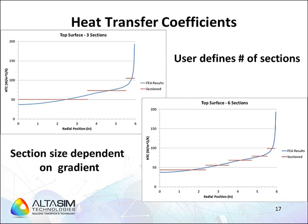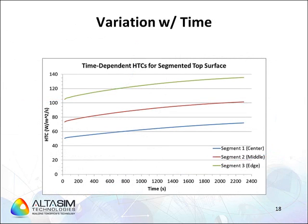Currently, the design methods used in industry specify that the HTC values are held constant over time. However, the results from COMSOL show that these HTC values do vary with time. In these results, the values of HTC are calculated at three different segments on the y-axis, and the time in seconds appears on the x-axis. The case considered here segments the top surface of the pancake into three segments. The center segment, or blue curve, has the lowest HTC, and the outer edge, or green curve, has the highest HTC. These data indicate that HTC can increase by approximately 40% during the quenching process. Thus, the results from COMSOL show that the constant HTC approximation introduces error into the results.